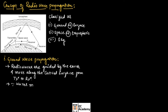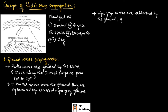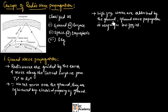Since waves move over the ground, they are strongly influenced by the electrical property of the ground. High frequency waves are strongly absorbed by the ground, which is why ground wave propagation is useful for low frequencies.